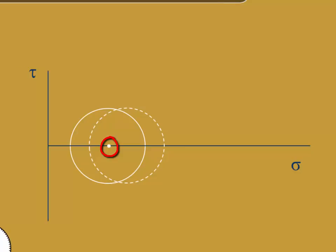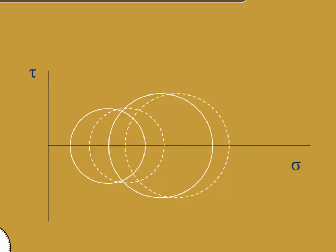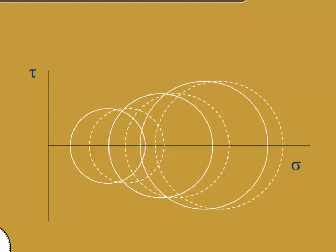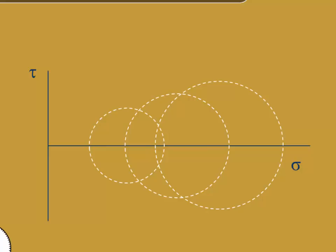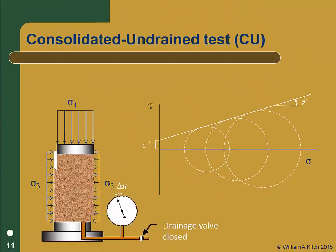As in previous tests, we can test a second specimen at a higher consolidation stress, shear it until failure, and determine the total stress circle at failure. Again, we know the pore pressures at failure, so we can also plot the effective stress circle at failure shown with dashed lines. Finally, we test a third specimen at a higher confining stress and obtain another set of total and effective stress circles at failure. We now have two sets of failure circles: solid circles represent total stresses at failure, and dashed circles represent effective stresses. Considering just the effective stress circles, we can plot the effective stress failure envelope and determine the strength parameters phi prime and c prime. Therefore, from a CU test with pore pressure measurements, we can determine the effective stress strength parameters even though the shear phase is undrained.